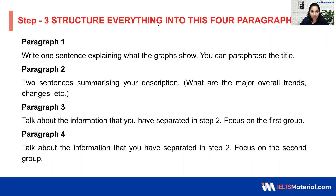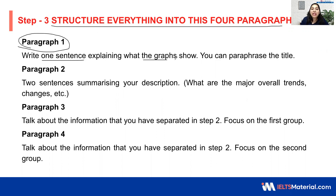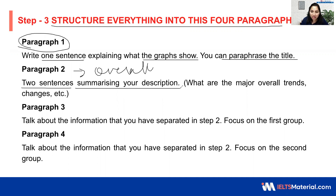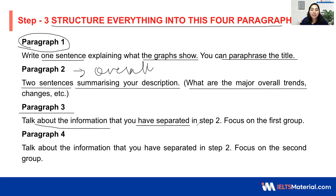The next step is to follow the structure — structure everything into four paragraphs. Paragraph 1 is the introduction: write one sentence explaining what the graph shows, and you can paraphrase the title to complete it. Paragraph 2 is the overall or overview paragraph, where you write two sentences summarizing the major overall trends or changes. Paragraph 3 will elaborate on the notes you have taken, related to the highest and lowest or other ideas, covering the information you separated in step 2, focusing on the first group.